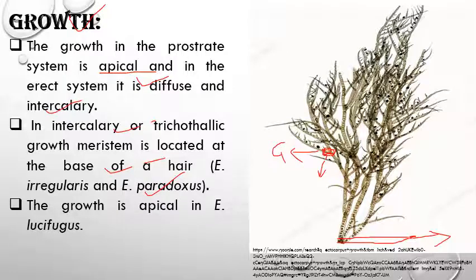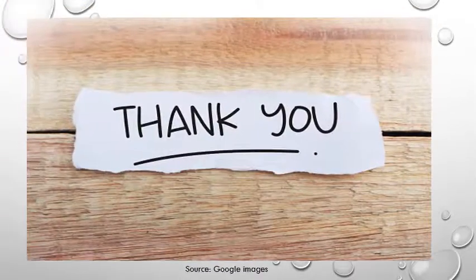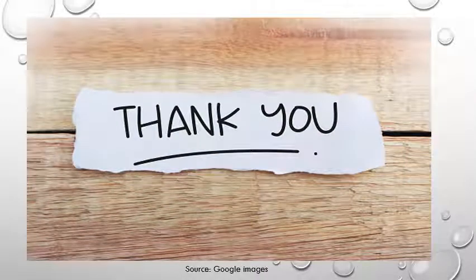There is also one species in which growth is apical — the apical tip cell is meristematic, divides and re-divides, and helps in elongation of the filament. This occurs in Ectocarpus lucifugus. This is all about today's discussion. Thank you, have a great day!